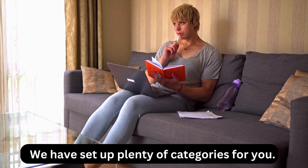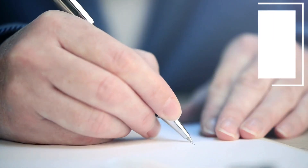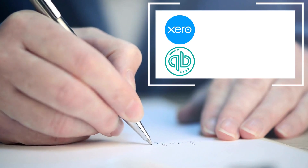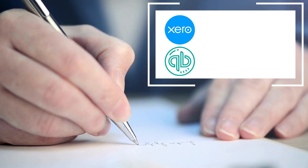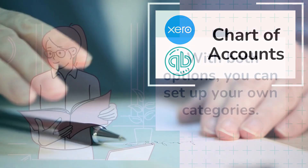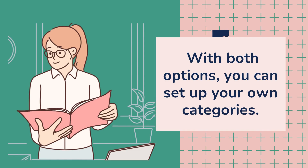On the other hand, if you've signed up to software such as Xero or QuickBooks, you should find that it comes pre-loaded with what's called a chart of accounts. In both the spreadsheet and the software options, if there are particular income and expense categories not set up that you want to use, you can simply set them up yourself.